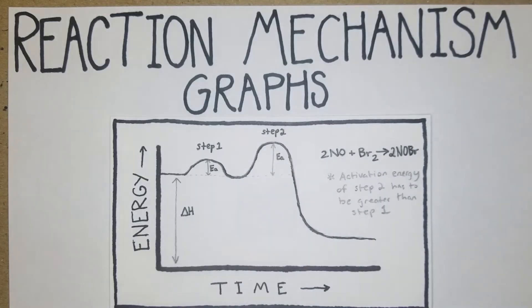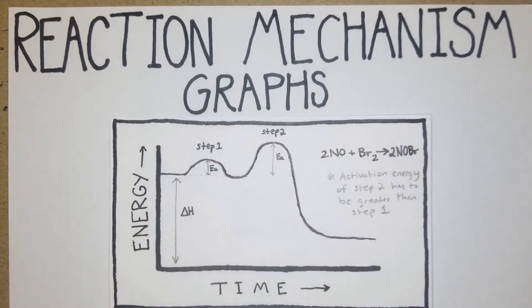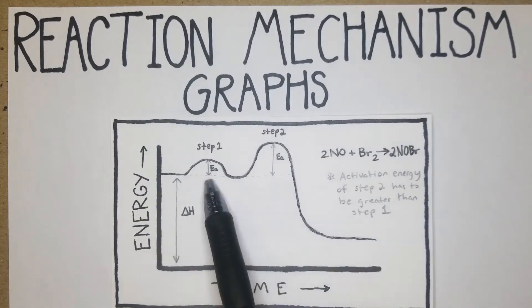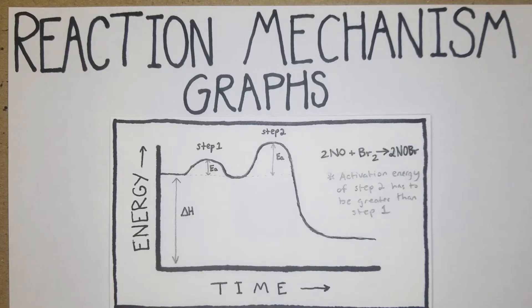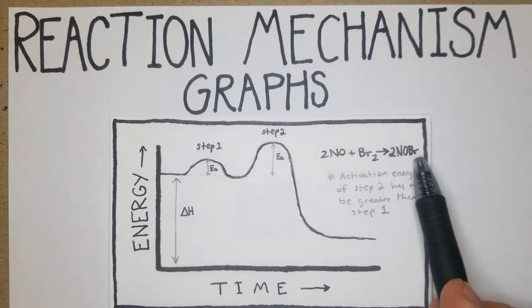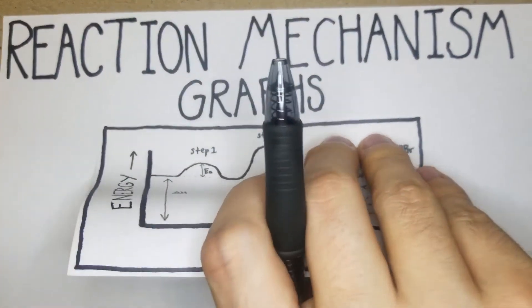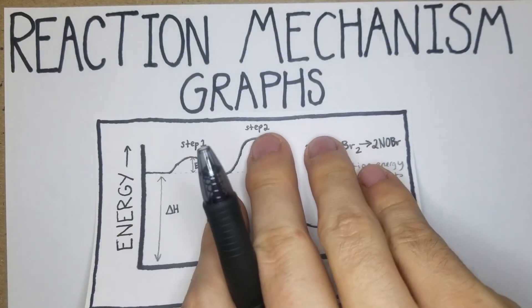Here's the standard way these are usually shown: time is on the x-axis, energy is on the y-axis. You have your delta H, which is the amount of energy you start with, and then your Ea, the activation energy. You can have multiple activation energies depending on how many steps you have. In this case, 2NO + Br2 yields 2NOBr. The activation energy of step two is greater than step one, so step two is the rate-determining step because it requires more energy.